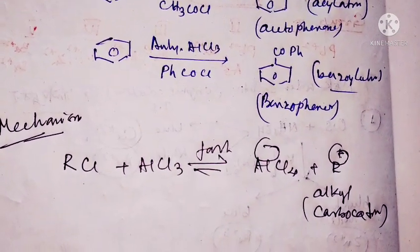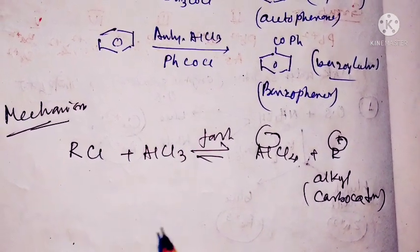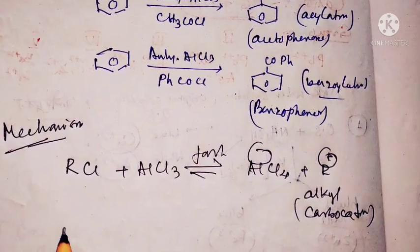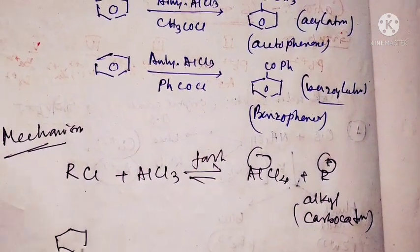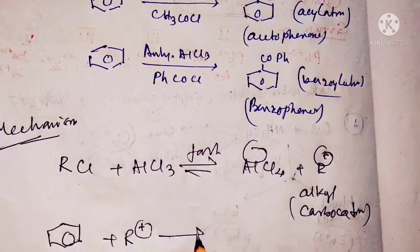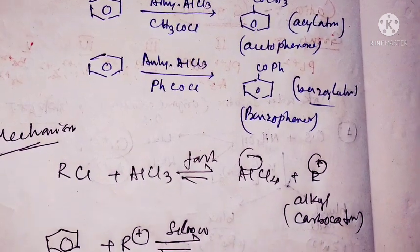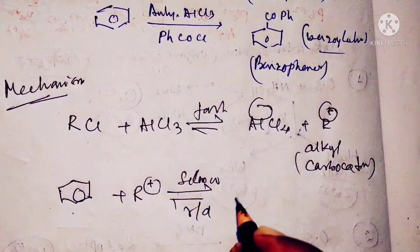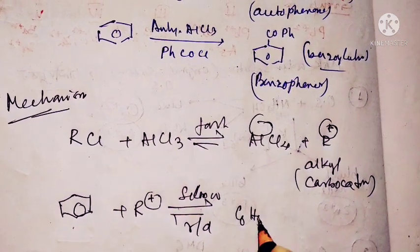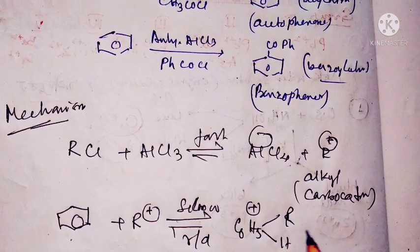The alkyl carbocation is produced, and then in presence of benzene, the carbocation reacts with the benzene ring in a very slow step. This slow step is our rate-determining step, and it produces C6H5R and H+.